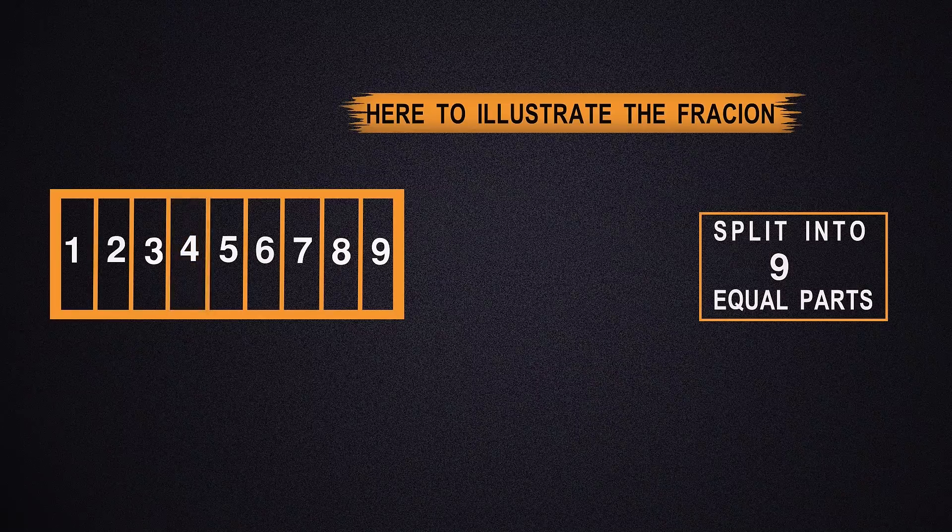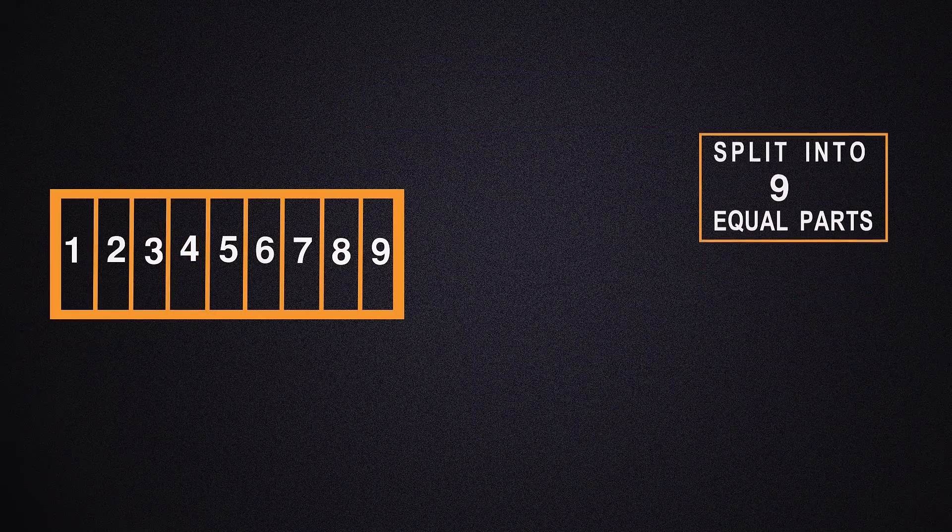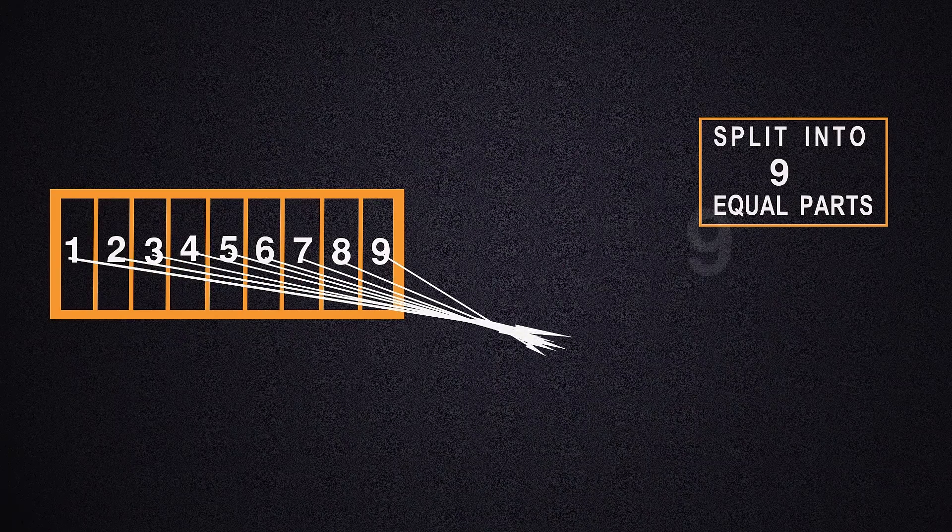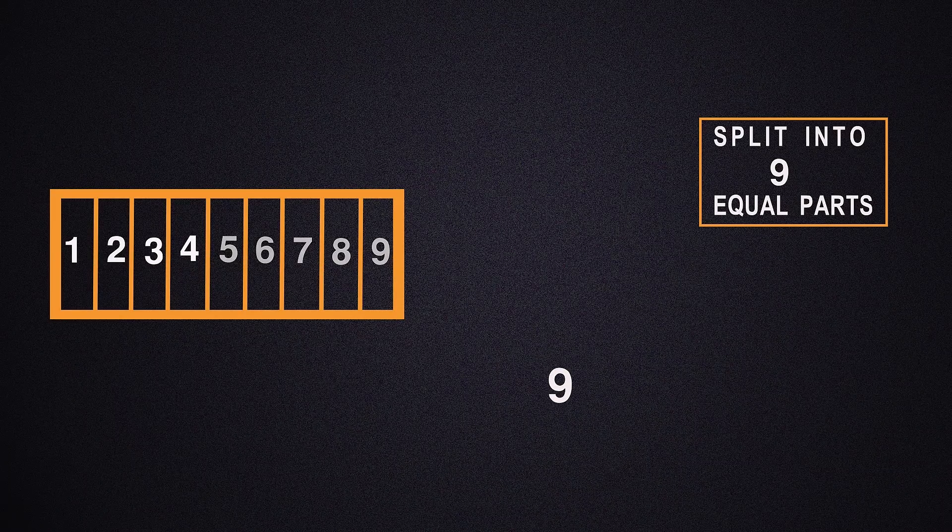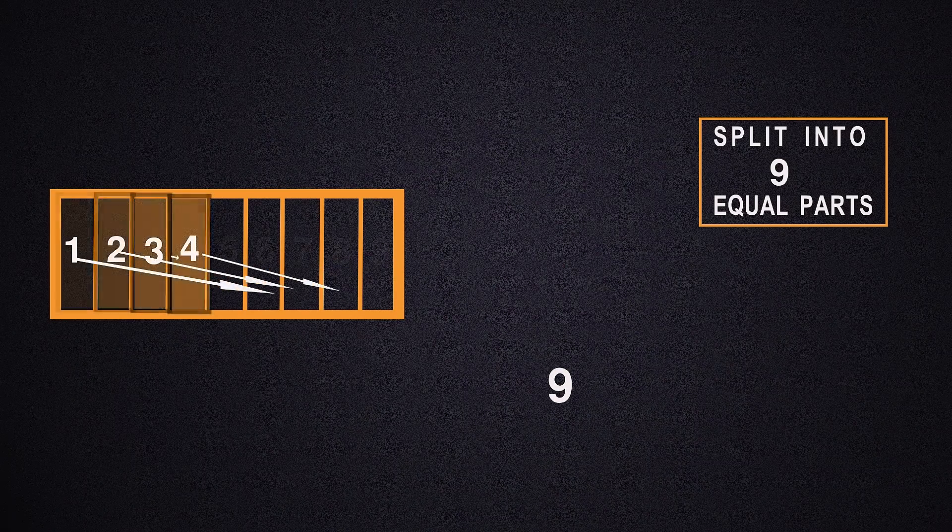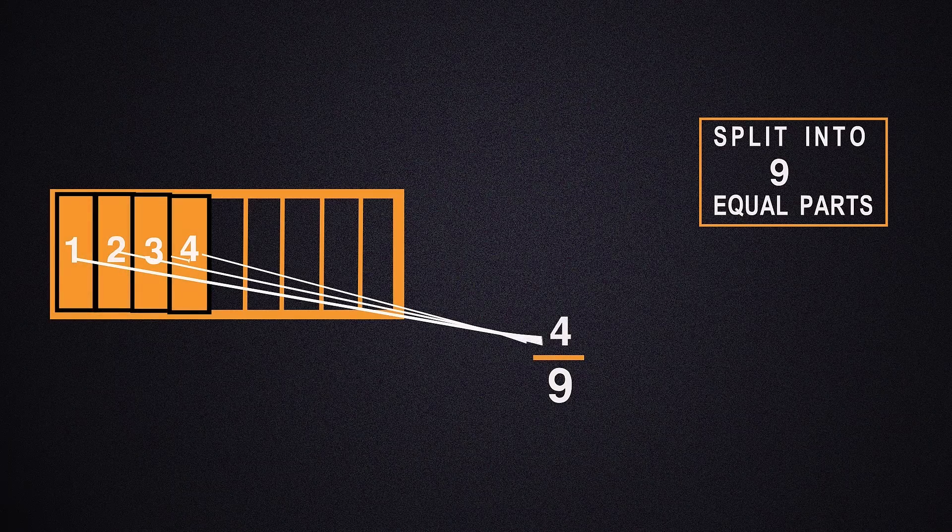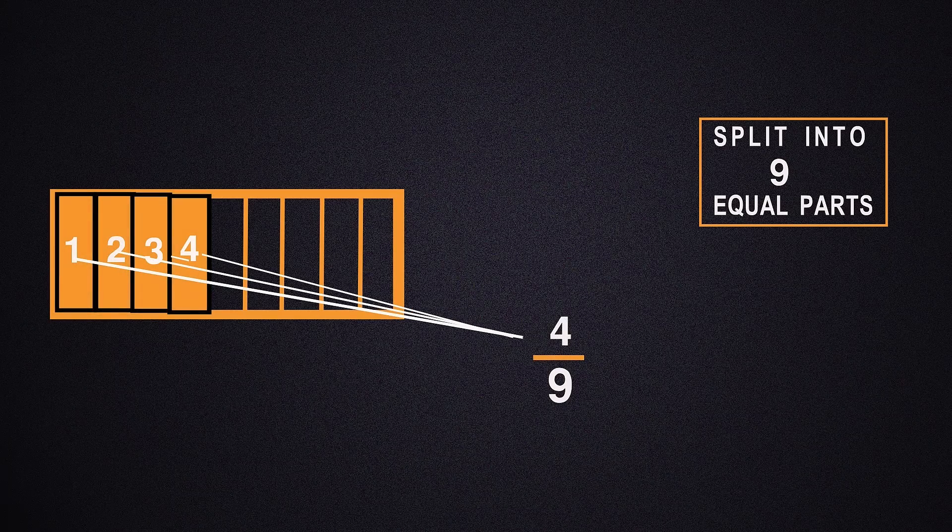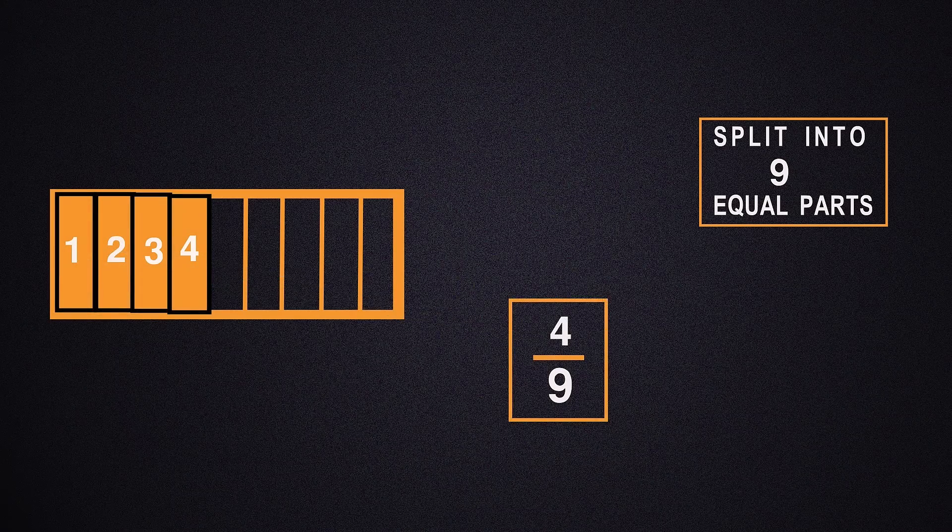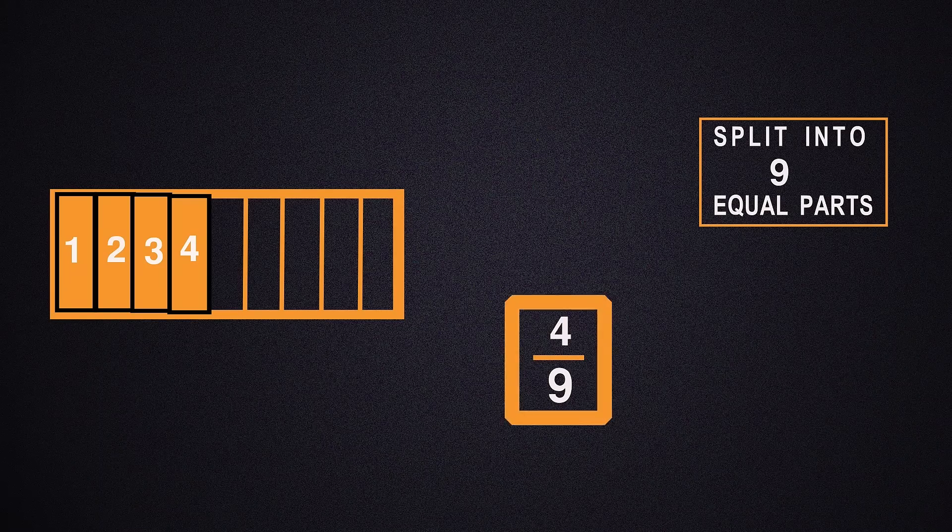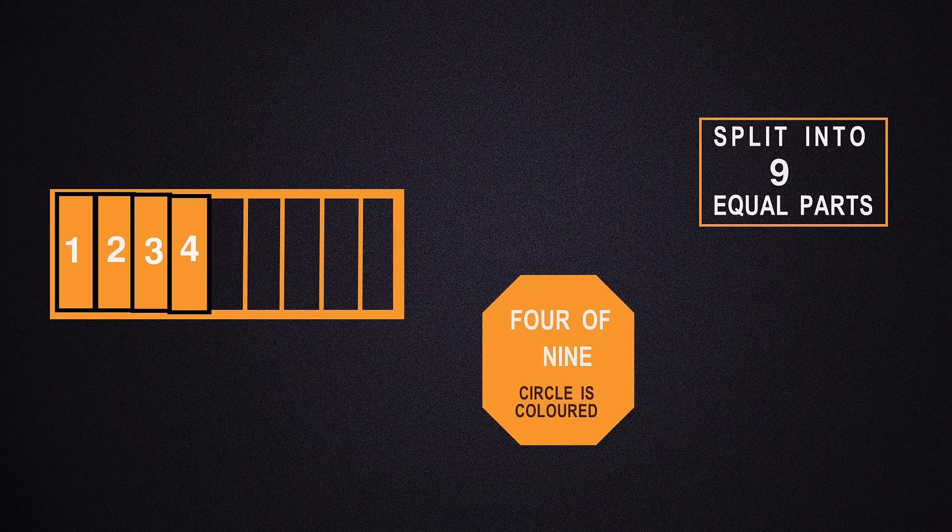If we were to express the number of shaded parts in a fraction, we could say that there are a total of nine portions and four portions are shaded. So the fraction would be written as four over nine. Four out of nine parts of the rectangle is colored.